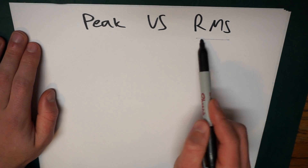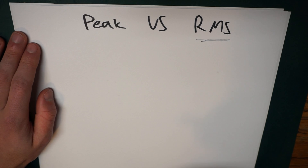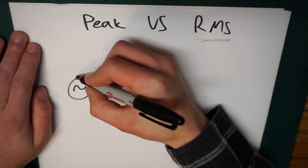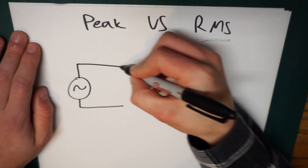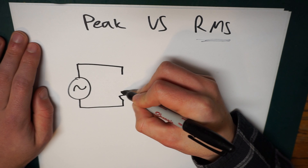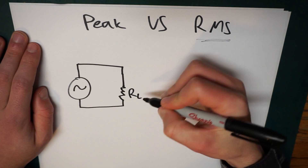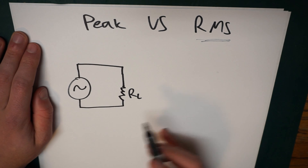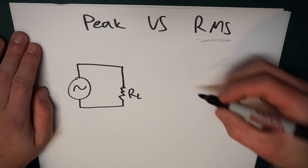So to start, I really want to explain what RMS actually means. To do that, consider the following two circuits. If I had some AC power source over here with some load — we'll call it a resistive load, RL — this is a purely resistive load. There's no inductance or capacitance or anything like that going on here. It's just resistive.